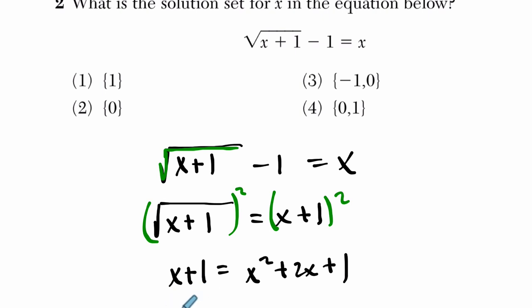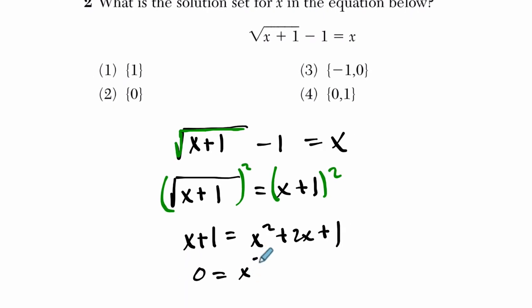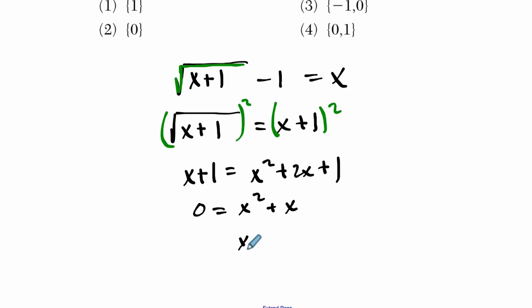If I subtract x and 1 on both sides, I would get x squared plus x. 2x minus x is just x. And 1 minus 1 is 0. So we're dealing with this right here, and I would just factor x out.